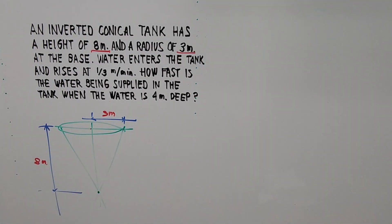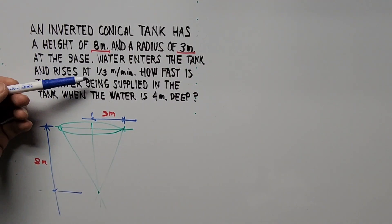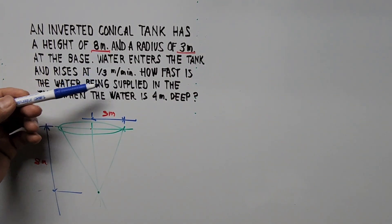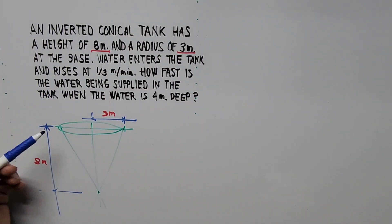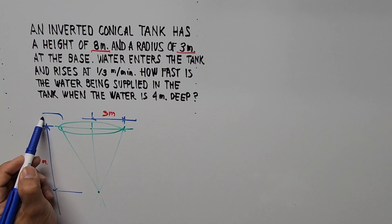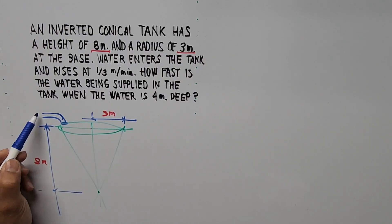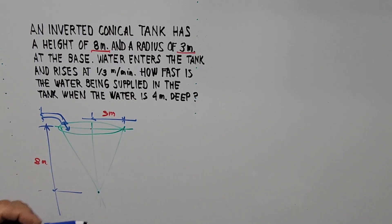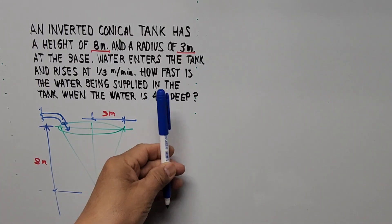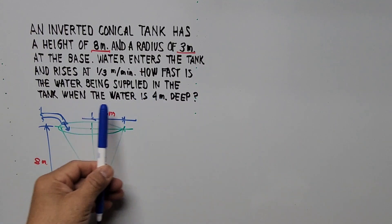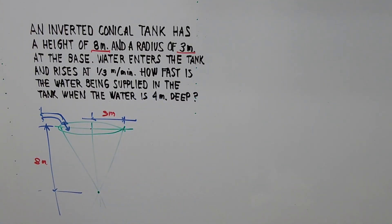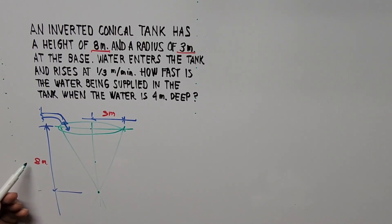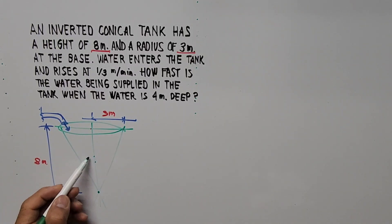Water enters the tank and rises at one-third of a meter per minute, so there must be a supply pipe somewhere here. Water is flowing from there. The question is: how fast is the water being supplied in the tank when the water is 4 meters deep? Since the total height is 8, 4 meters deep is about half of that.